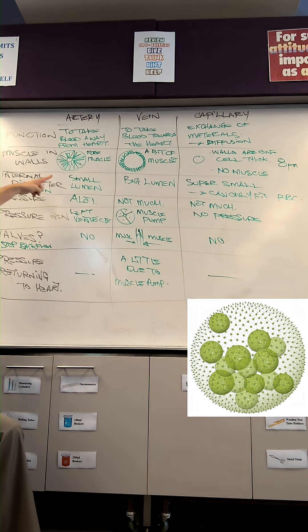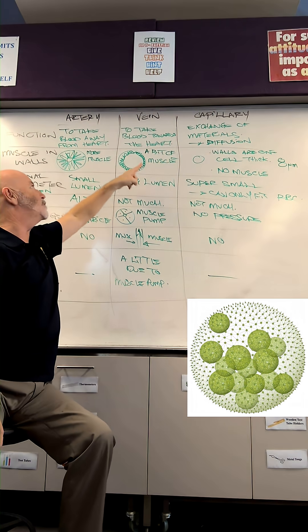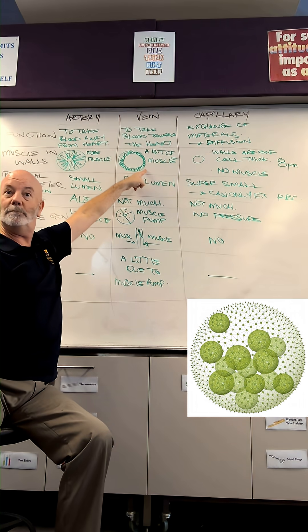The muscle in the walls. Here is a diagram of a cross-section. Arteries have lots of muscle in the wall and a very small lumen. A lumen is the inside of a tube. The vein has a large lumen with only a little bit of muscle in the walls.